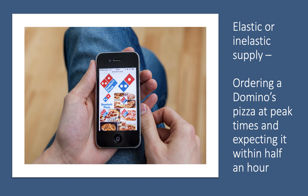A good example of price inelastic supply is when demand is at peak times. For example, if you're ordering a Domino's pizza or a Nando's takeaway at absolute peak times and expecting delivery within half an hour, you might be struggling. Whereas at off-peak times, delivery times tend to come down because they have spare capacity available.